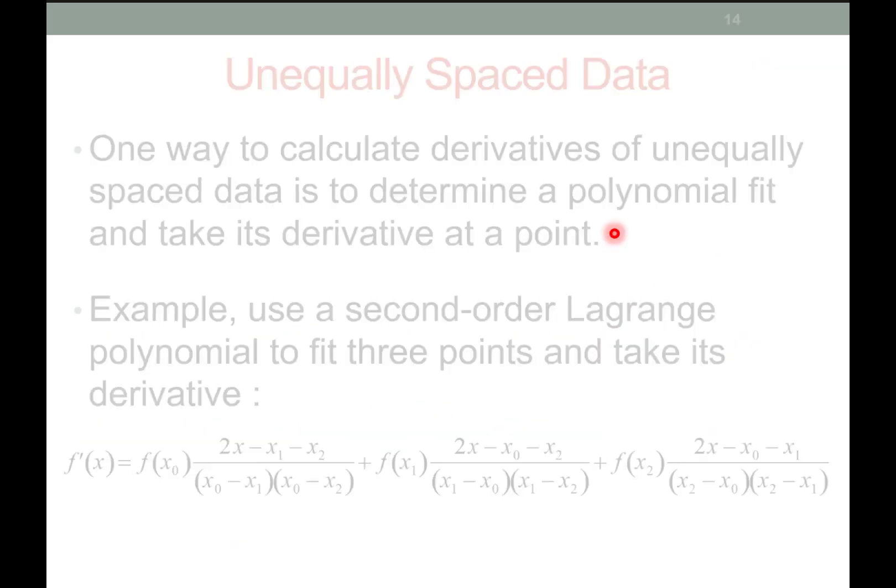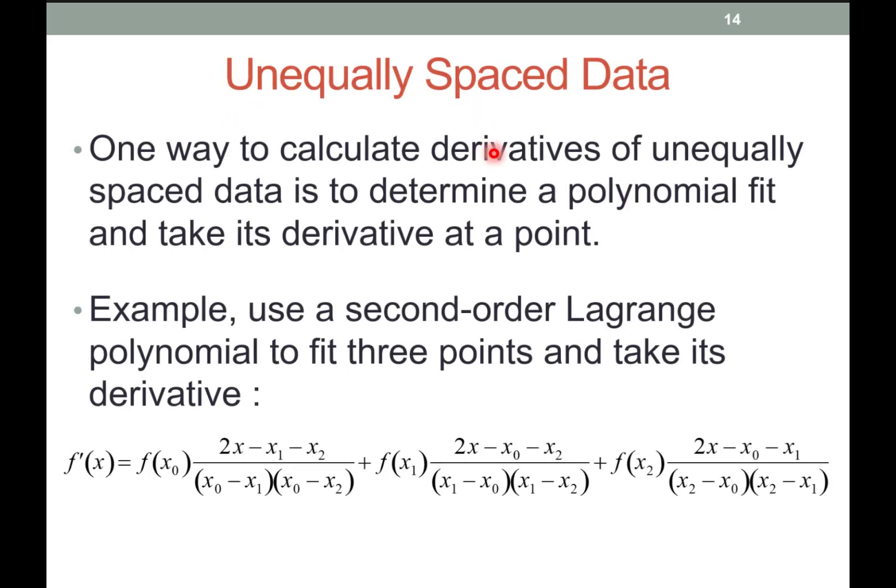Now we talk about what to do when we have data points — not a model or function — where the points are not equally spaced. If I can't easily find a step size where all points exist at the required x values — for example, x values of 0, 1, 5, 6, 7, 20 — what do I do? Basically, we interpolate. We covered Lagrange interpolation, and we can use that to fit the data points and find whatever intermediate point we need to apply the desired step size.